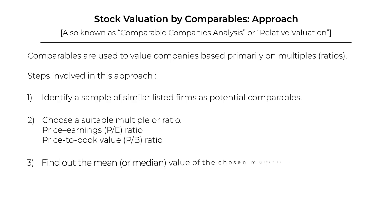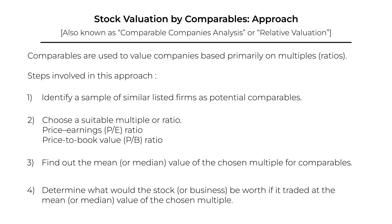The third step is to find out the mean or median value of the chosen multiple for our comparables. Finally, the last step is to estimate the stock price — essentially answering: what would the stock be worth if our firm traded at the same multiple as that of our comparables?